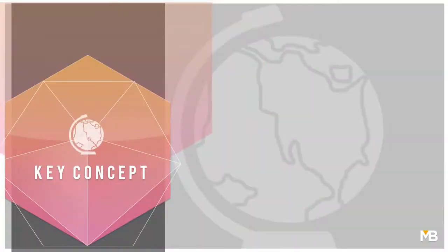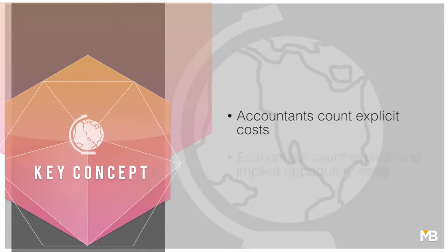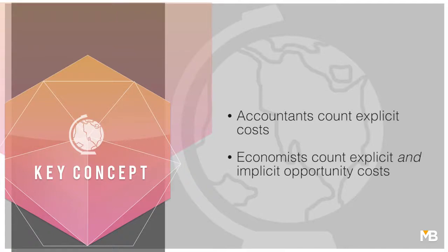In this module I want to tackle head-on the intriguing difference between how the bean counters in the accounting department of a firm measure profits and how economists do so, and of course make the case that the economist's definition of profits is the more relevant one for making most business decisions.